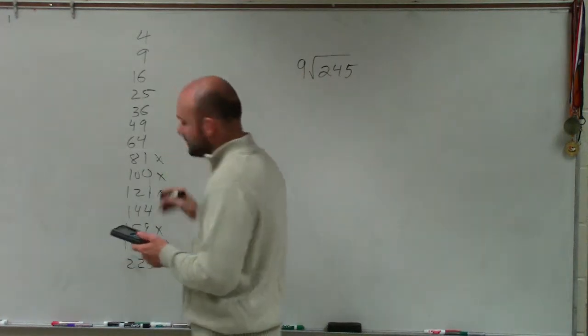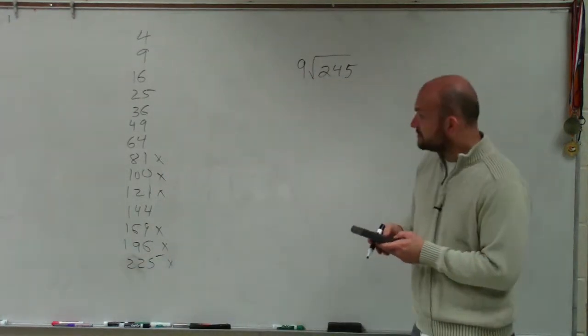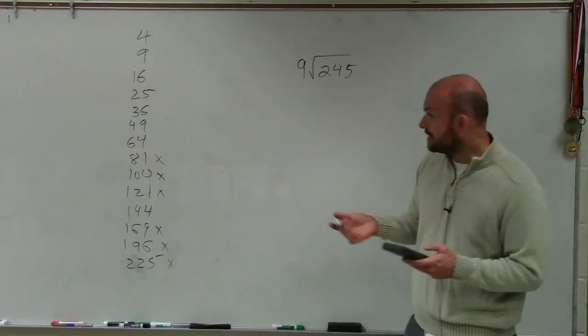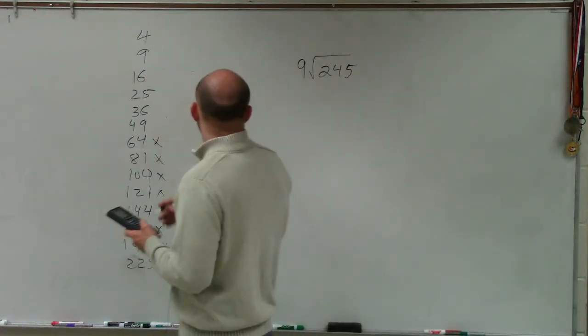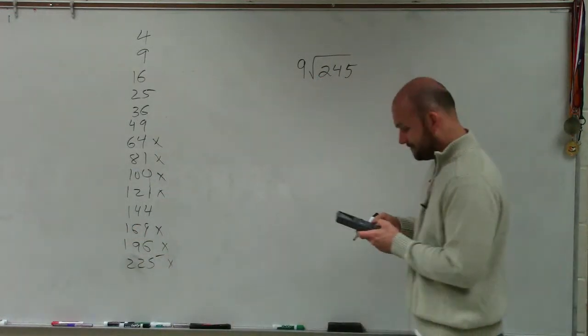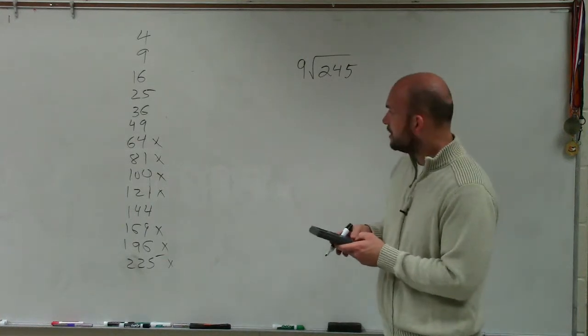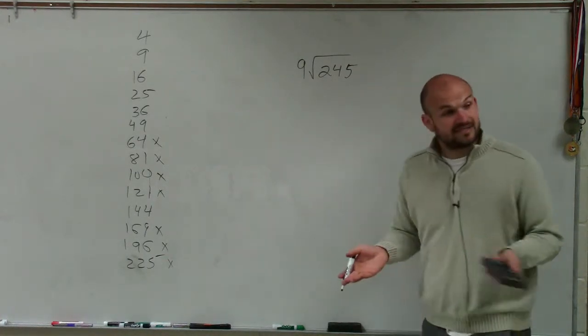Then we take 245 divided by 64, 3.79. So that doesn't work. Then I take 245 divided by 49, and that's 5. That's good.